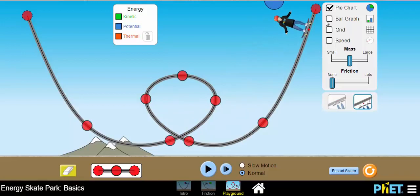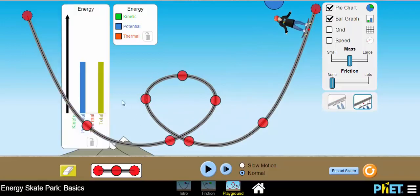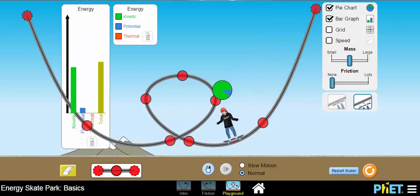In addition to that, we can add in a bar graph. A bar graph is just another way to display the energy of the skater as the skater moves through the loop. You can see how that changes.